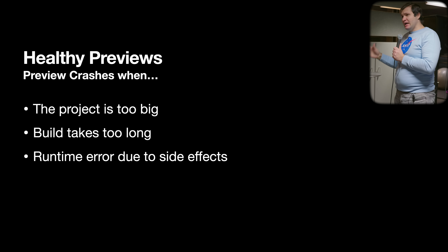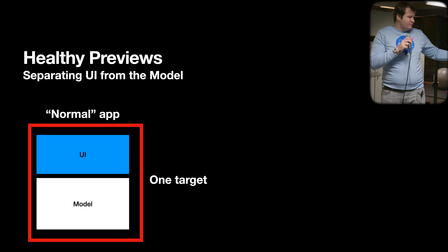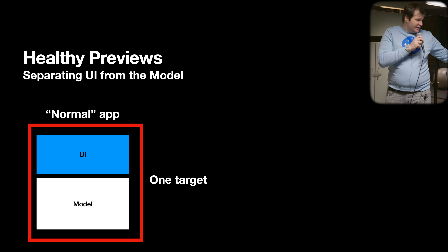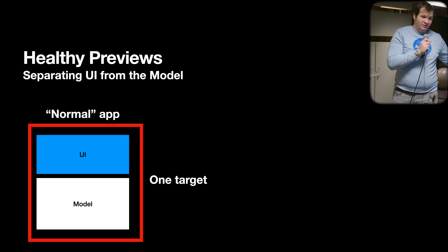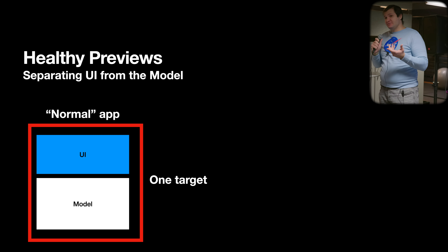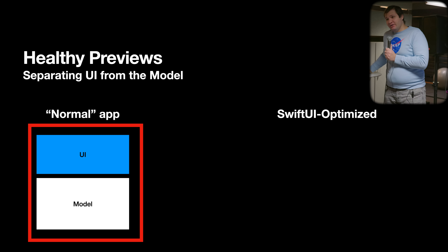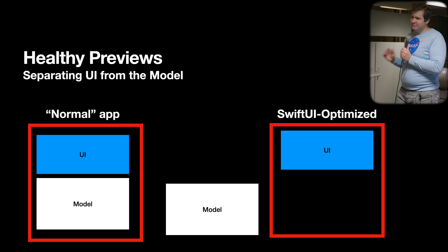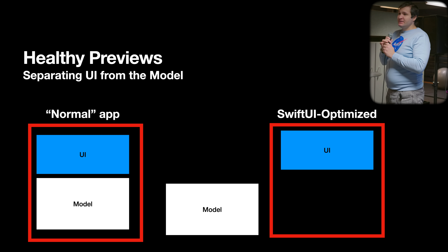Let's look at how a typical iOS app is structured. Normally an app has one target and the code can be split into two pieces: UI code — either UIKit, SwiftUI, or AppKit for Mac — and something related to model logic, with code gluing it all together. If we try to optimize this for SwiftUI, we need to think differently. It's the model that's causing the problems — it's too heavy, too slow to compile, or has side effects.